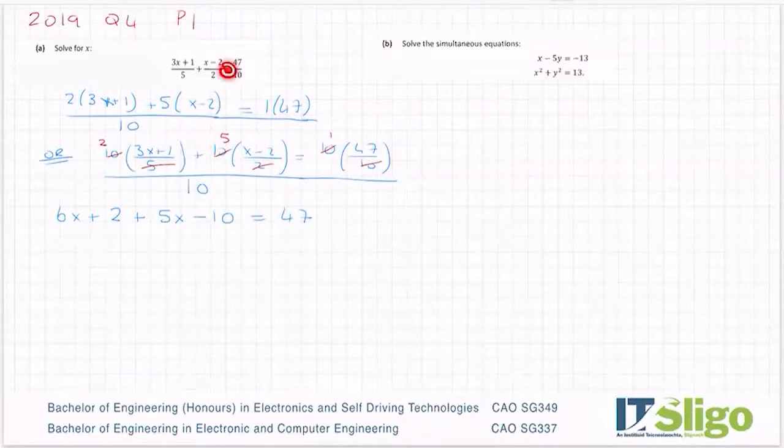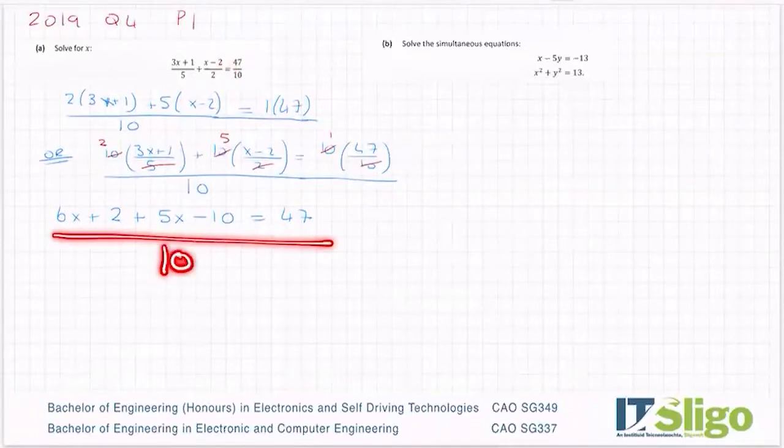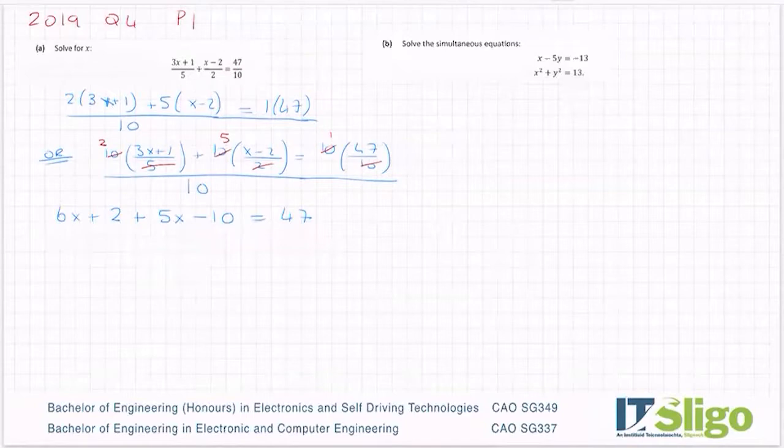When there's an equals sign, when it's a solve, you can drop the bottom line when everything is over 10. We can drop the bottom line because it's a solve. In fact what we're doing is we're multiplying across by 10 and they cancel.